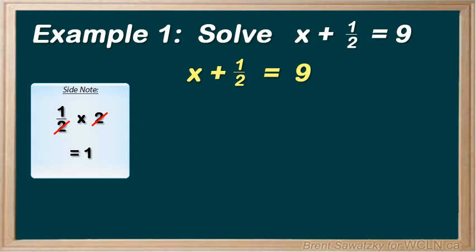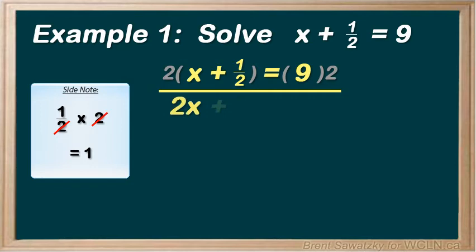So, if we decide to multiply both sides by 2, we still keep it all balanced and legitimate. So let's give that a try. On the left, we would now have 2x plus the 2's cancelling out 1, and on the right we would have 9 times 2 equals 18.